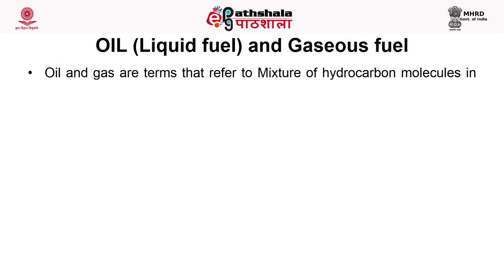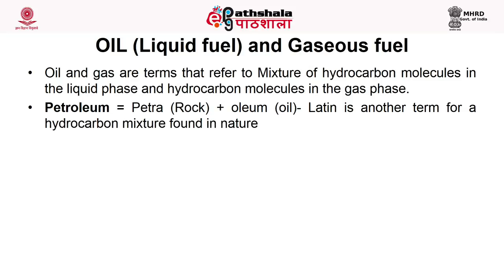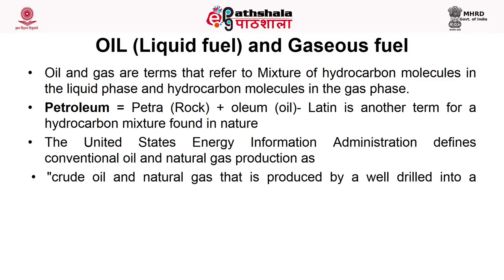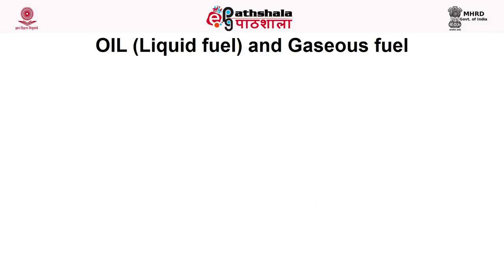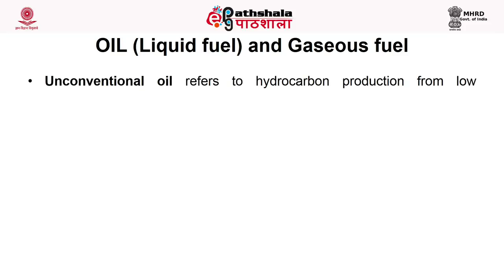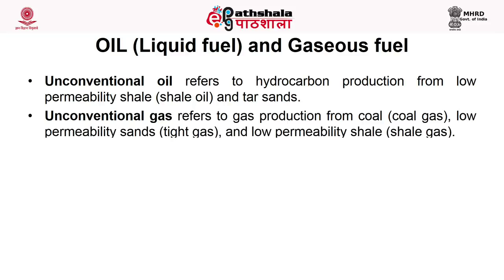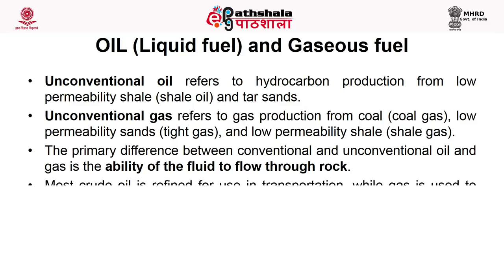Oil and gas refer to the mixture of hydrocarbon molecules in liquid phase and those in gaseous phase. It is normally synonymous with petroleum. Petroleum is derived from the Latin words petra meaning rock and oleum meaning oil. As per the US Energy Information Administration, conventional oil and natural gas is crude oil and natural gas produced by a well drilled into a geological formation where reservoir and fluid characteristics permit oil and natural gas to readily flow to the wellbore. Unconventional oil refers to hydrocarbon production from low permeability shale and tar sands. Unconventional gas refers to gas production from coal (coal gas), low permeability sand (tight gas) and low permeability shale (shale gas). The primary difference between conventional and unconventional oil and gas is the ability of the fluid to flow through rock.